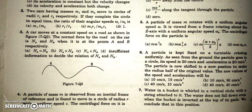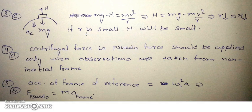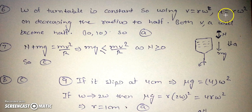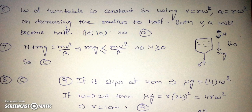A particle is kept fixed on a turntable rotating uniformly. As seen from the ground, the particle goes in a circle; its speed is 20 cm/s and acceleration is 20 cm/s². The particle is now shifted to a new position to make the radius half of the original. Since the turntable's ω remains constant, using v = rω and a = rω², when r is halved, both v and a reduce to half — so they each become 10.